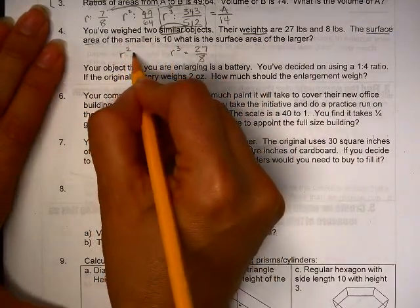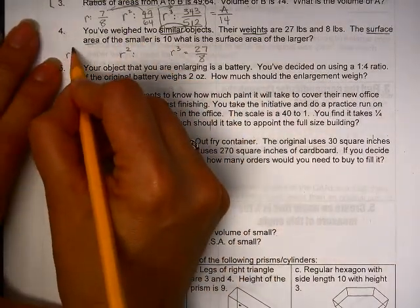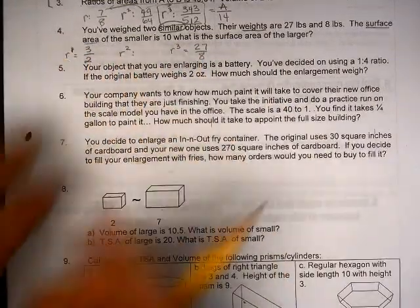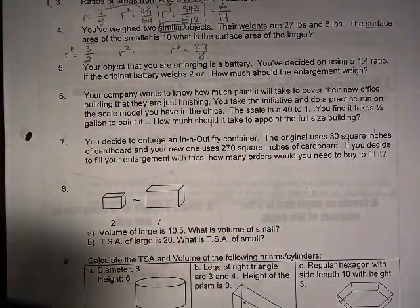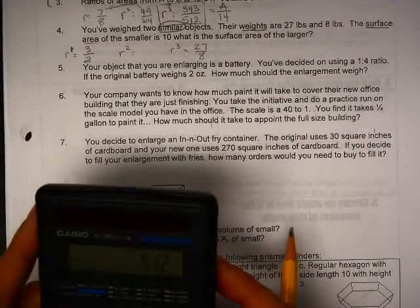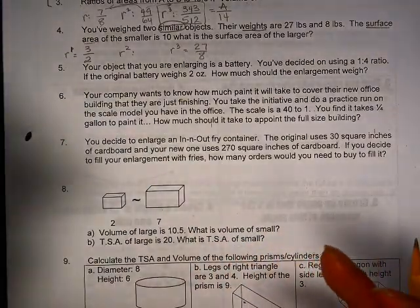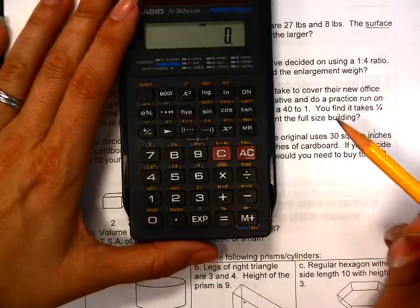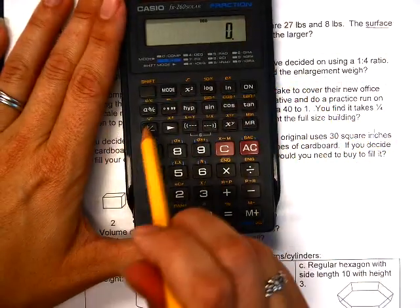And we're going to be looking for surface area. Now the thing is, I can't go straight to R squared. I have to go all the way back to R, which would be 3 and 2. Now, all of your calculators have some sort of a cube root possibility. You need to know what that is. This particular one, somewhere, is here.